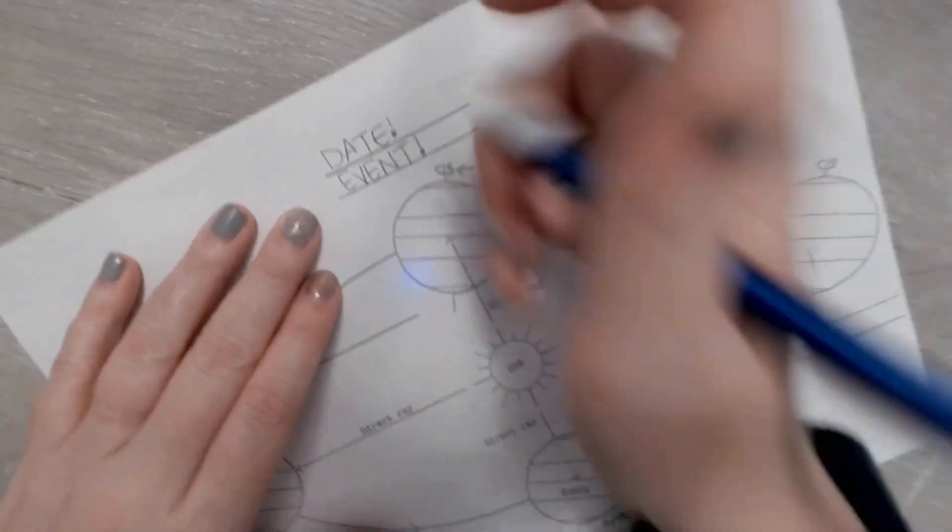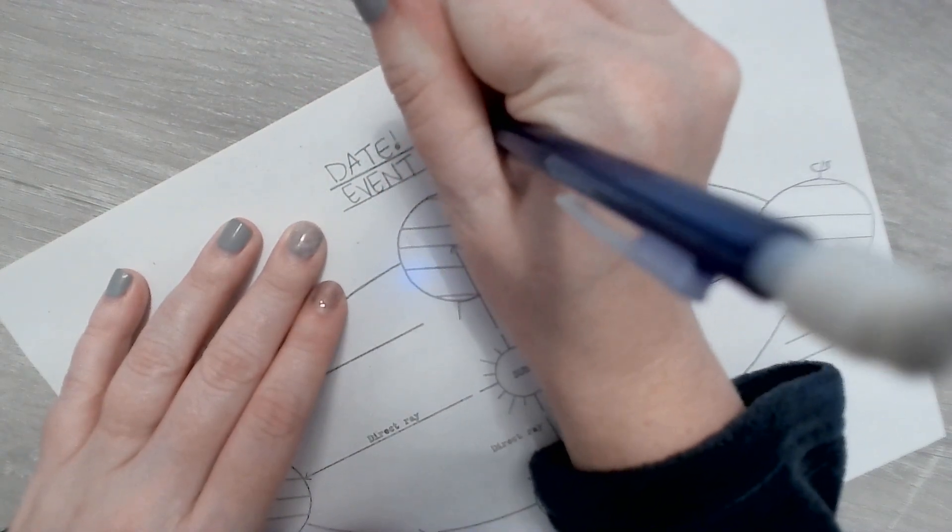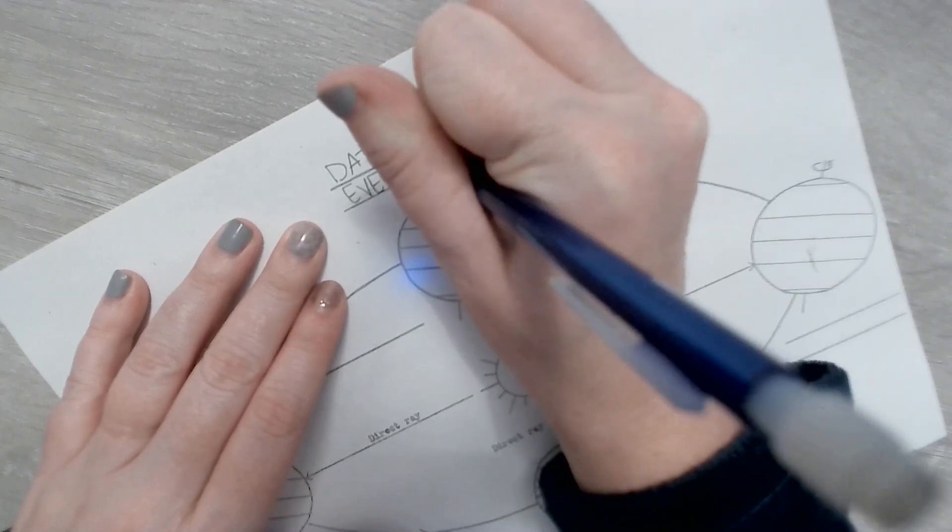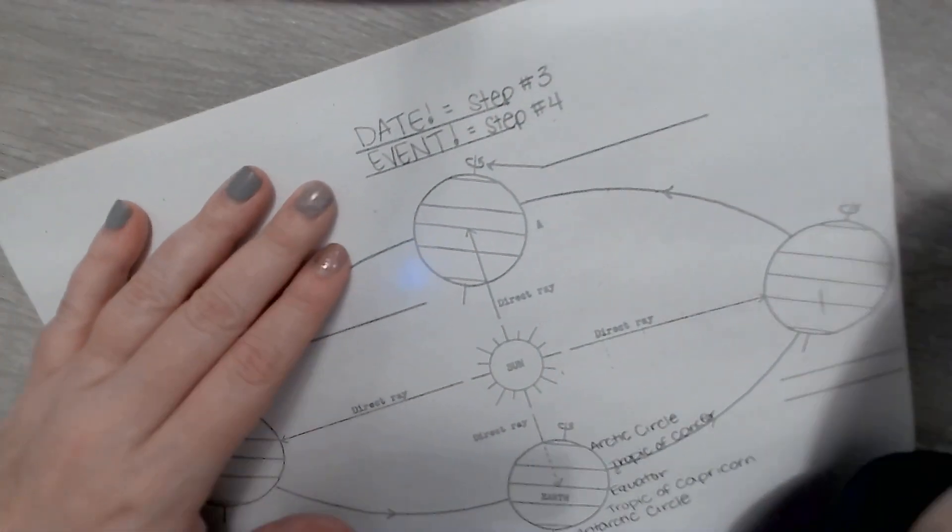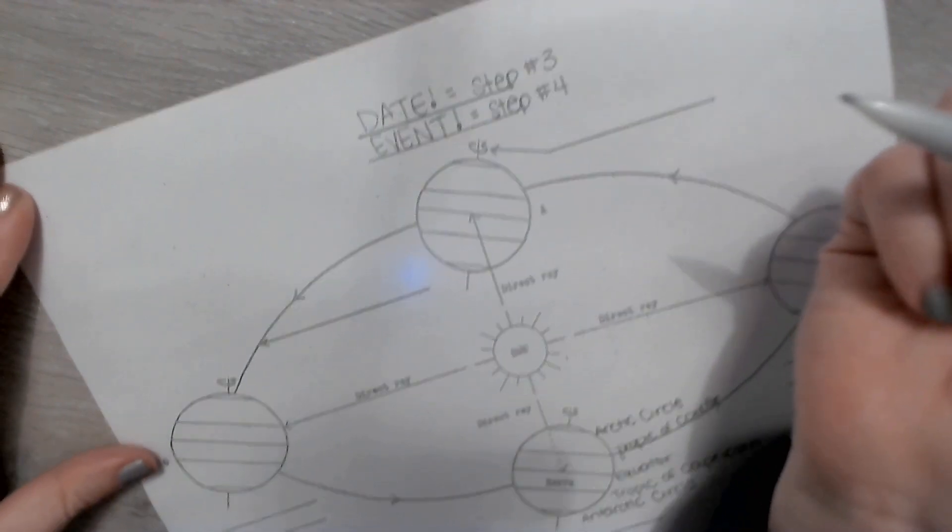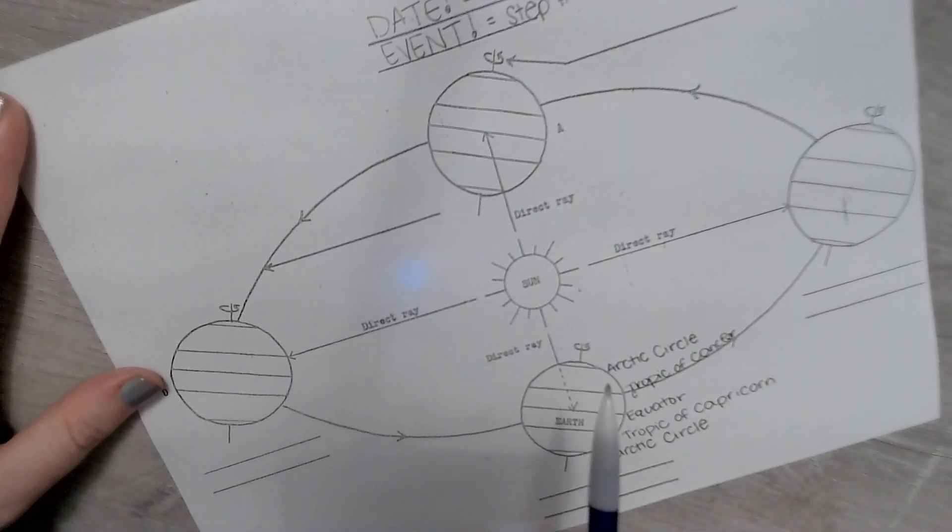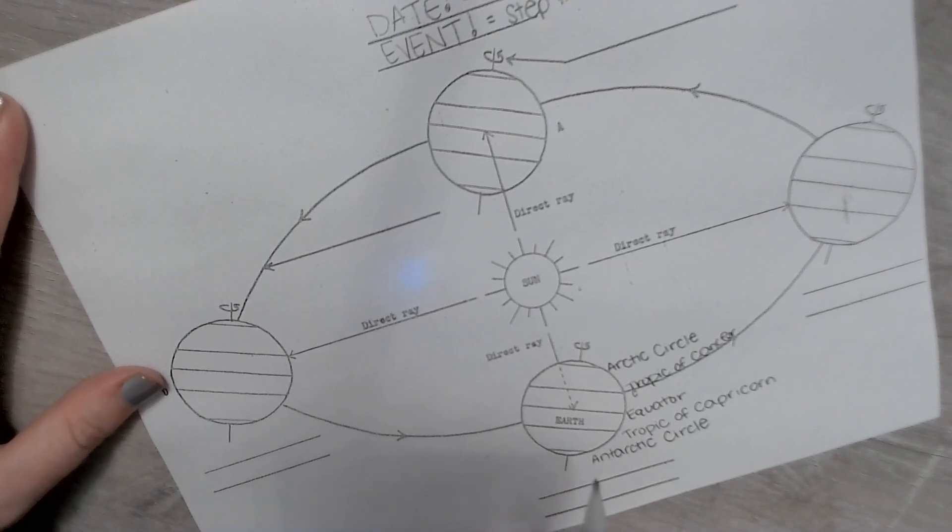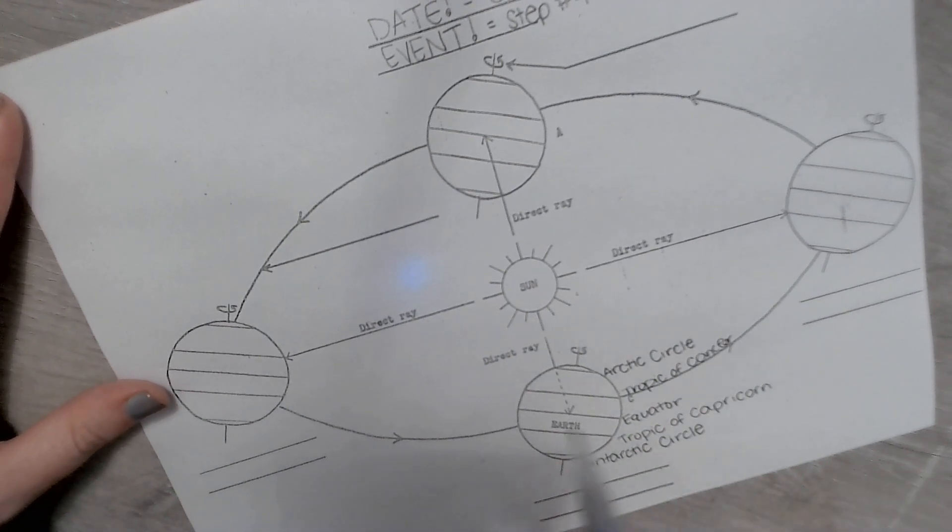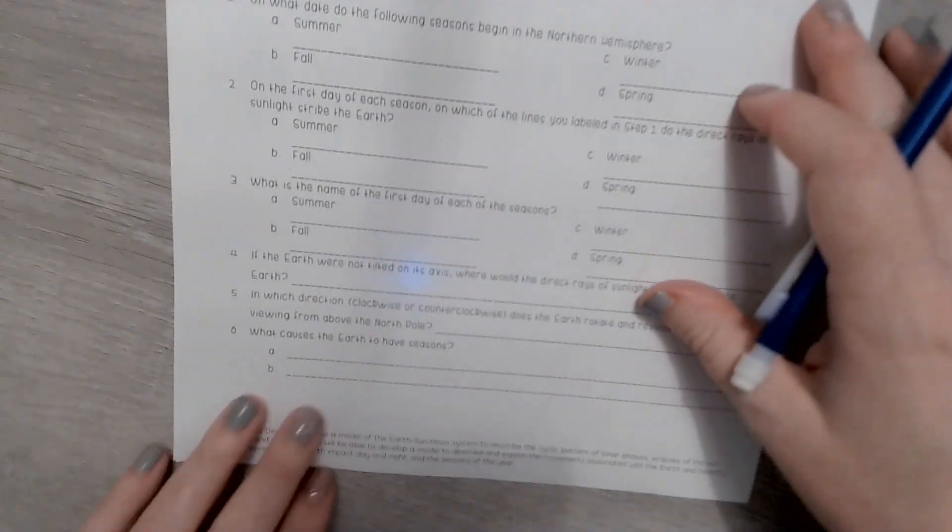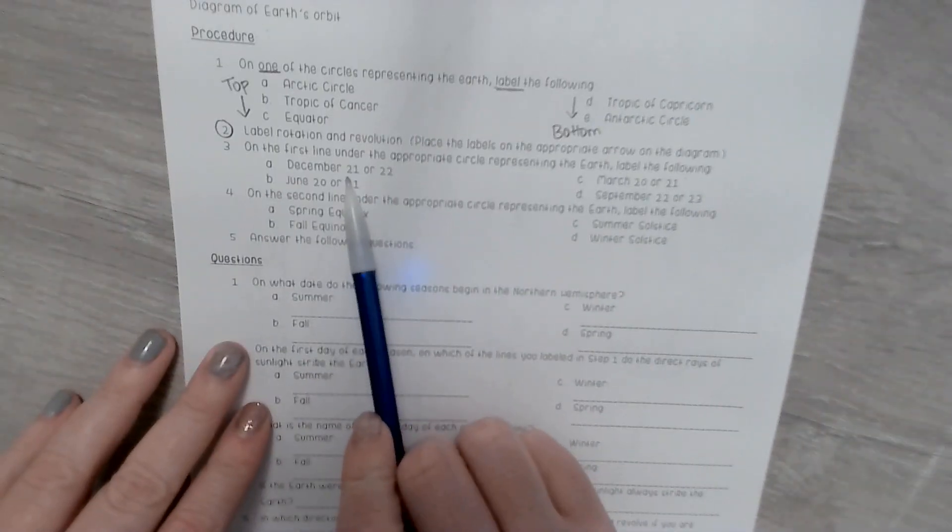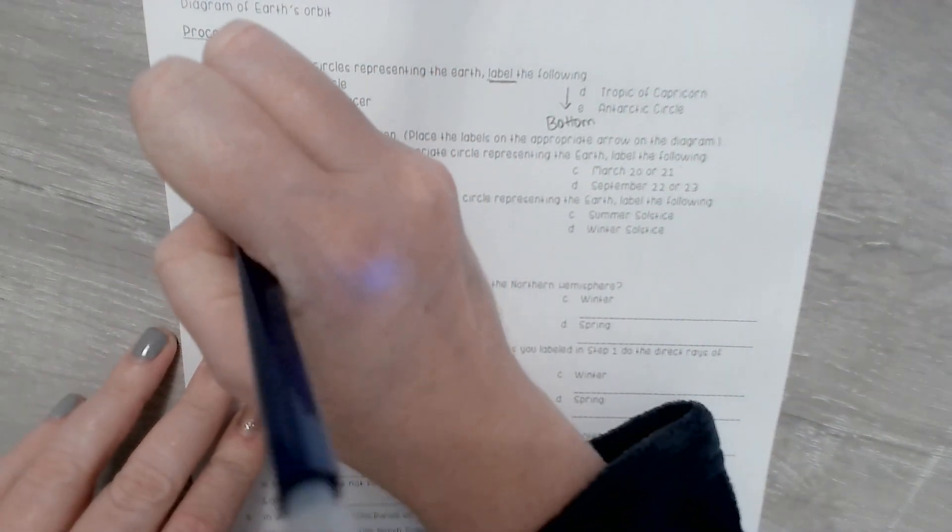The date goes along with number three, so step number three, and the event goes along with step number four. So you need to tell me which one is December, which one is June, which one is March, and which is September. We've already talked about this. If you refer back to your notes, especially your PowerPoint notes if you took those, it's got to be in the other ones too. It basically lays it out for you. So you have to make sure you come back and do this and this.